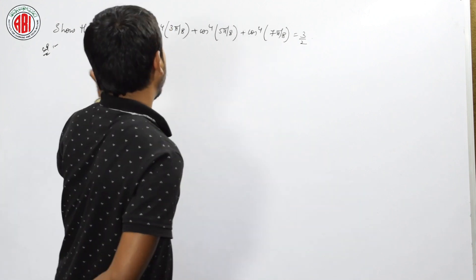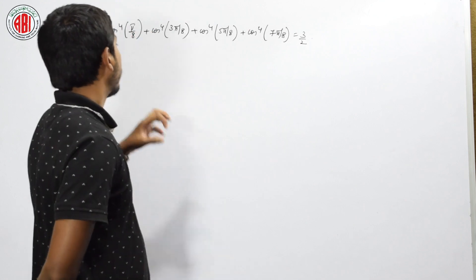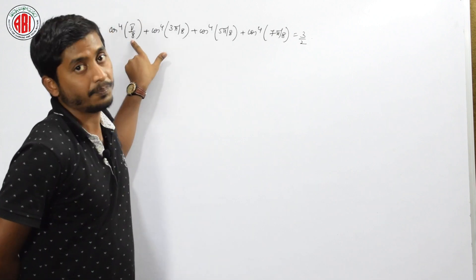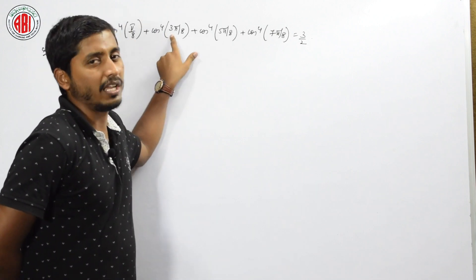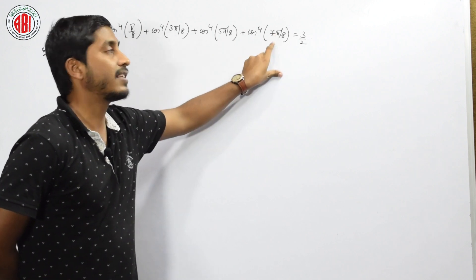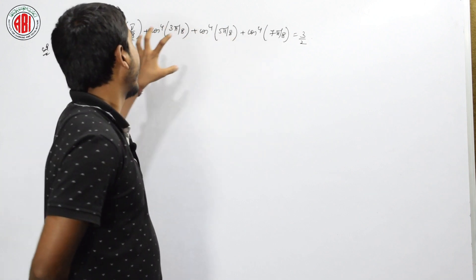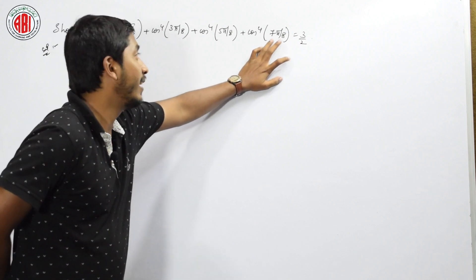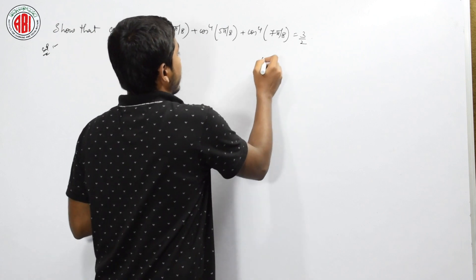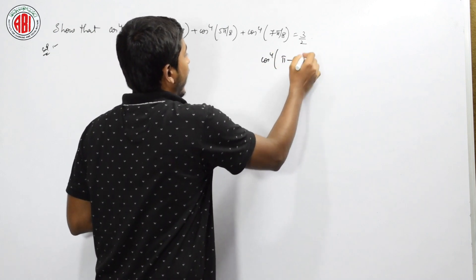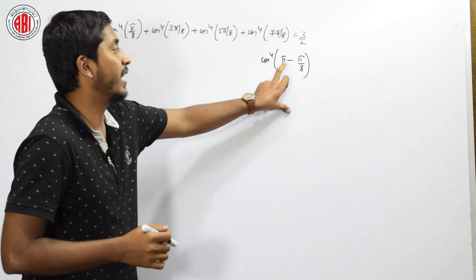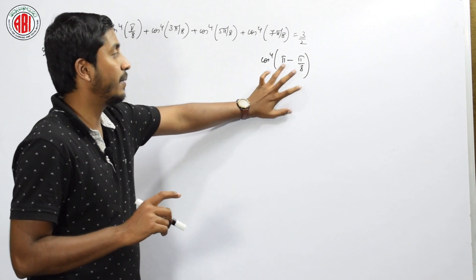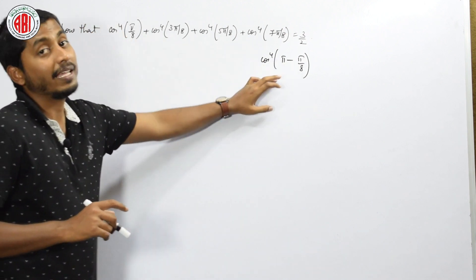One thing we know is that we have to convert everything into a single term. If we observe, π/8 is 22.5 degrees. Here 3π/8 is 22.5×3, 5π/8 is 22.5×5, and 7π/8 is 22.5×7. Can I write 7π/8 as π minus π/8? I will write this as cos⁴(π − π/8). Since 8π minus π is 7π, that gives 7π/8. Then cos(π − π/8) equals cos(π/8), so those two terms are similar.